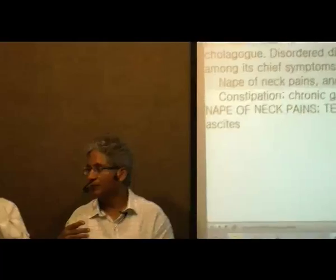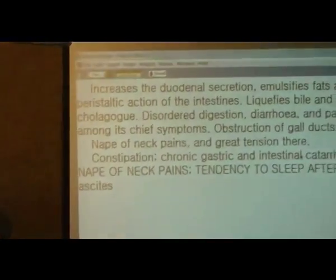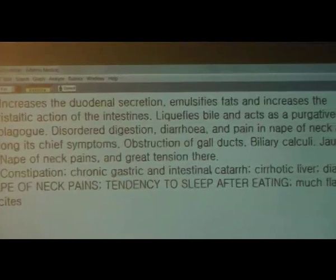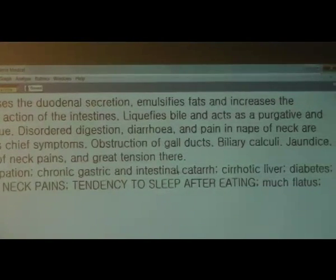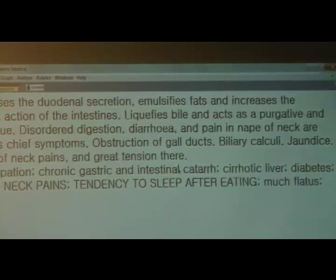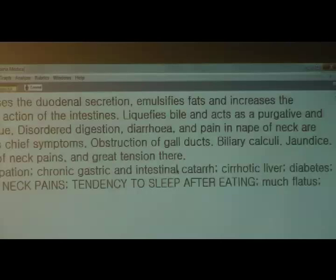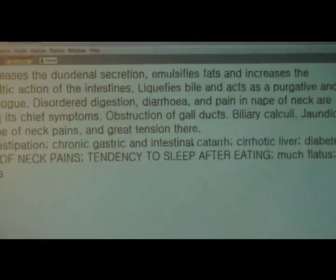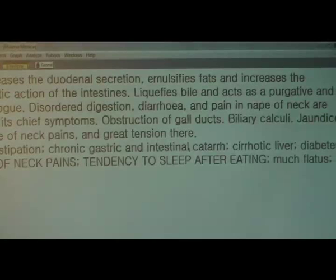Regarding how to use organ remedies — mother tincture once, along with the remedy, or three times a day, or in potency? The best method is to identify and correlate with other indications first. Examples of organ remedies include carduus marianus for the liver, chelidonium for the liver, and thlaspi bursa pastoris also as a liver remedy. Only after identifying the totality should you prescribe in low potency, very frequently, even constitutionally.